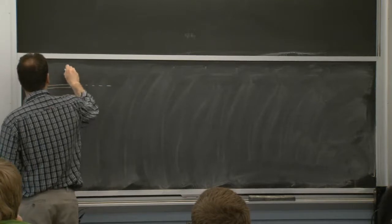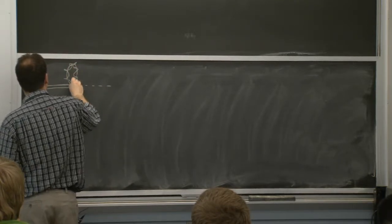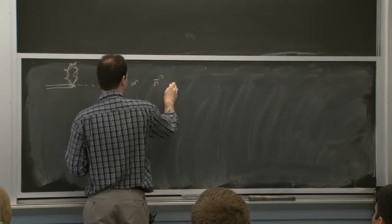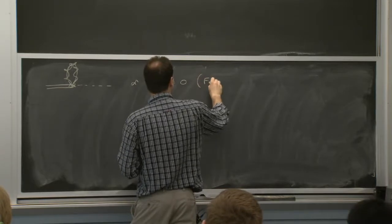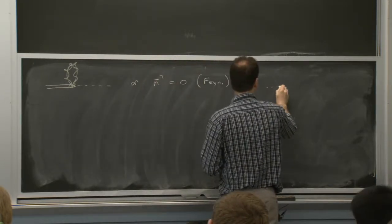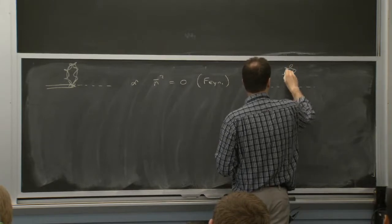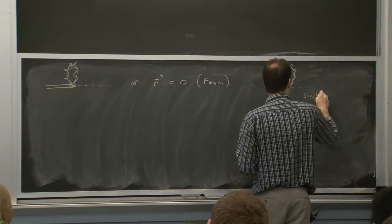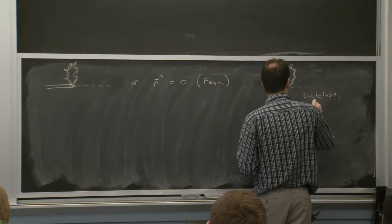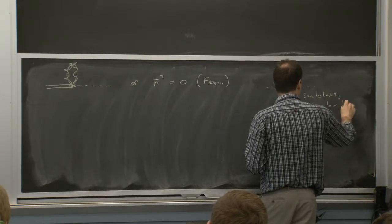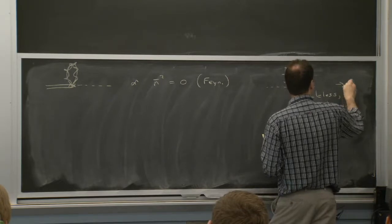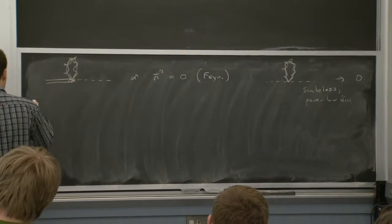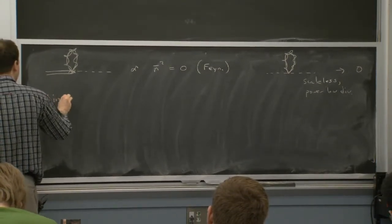What are the other possible topologies? We could write one where we take two attachments in the Wilson line and loop them back up, but that's proportional to n-bar squared, so that's zero in Feynman gauge. Likewise, there's a looping back up in the wave function renormalization, but that graph is scaleless and power-law divergent, so we can set it to zero in dim-reg. Those are all the diagrams.